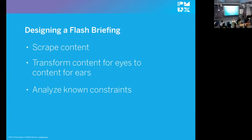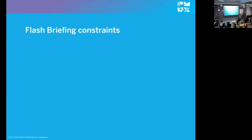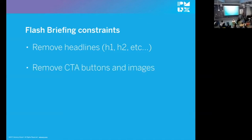We also had to work within the constraints of how our Daily Briefing articles are written by the web team. We couldn't have them rewrite the articles because they said they wouldn't do that, so these decisions needed to be made in an automated fashion. To create these editorial guidelines, I started by taking a sample of a Daily Briefing article and analyzing what it would look like with all the known flash briefing constraints removed — things that Amazon absolutely requires. For instance, headers and headlines can't be read as complete sentences, so we had to remove those. We had to remove calls to action, buttons, and images. It also limits any article to 4,500 characters.